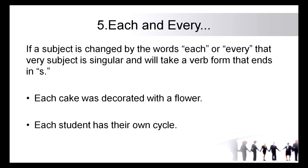Rule five: when the words 'each' or 'every' precede a subject, that subject becomes singular even if the noun is plural. If a subject is preceded by 'each' or 'every,' it takes a verb form that ends in S or ES. For example: each cake was decorated with a flower, and each student has their own cycle. In both cases, because 'each' has been added, we use the singular verbs 'was' and 'has.'